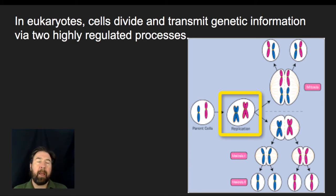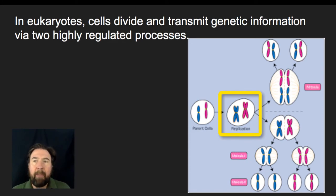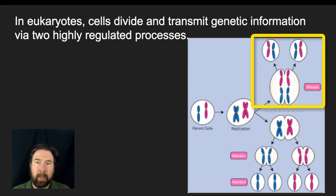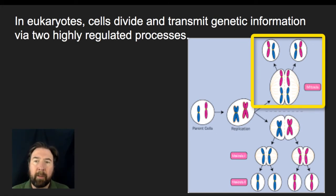Once that occurs, this cell could undergo two different types of division. If this is a regular body cell, or a cell that undergoes asexual reproduction, then it would go through mitosis. In mitosis, it would pull those two separate copies of the DNA apart, and we would produce two daughter cells that are identical to that original parent cell.